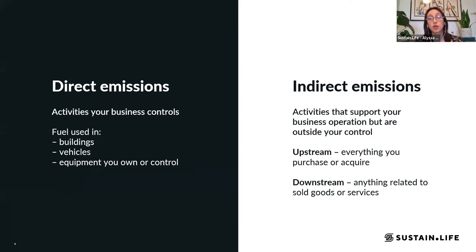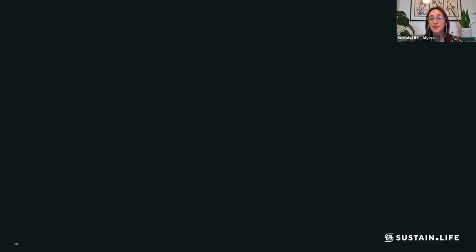We further break down indirect emissions into two categories: upstream and downstream. Upstream is everything that your business purchases or acquires — that's where electricity comes in, because you pay the utility bill. Downstream is anything related to the good or service that your business creates or sells. For example, if you are a professional services provider and your staff goes to client meetings not in company-owned cars but on a subway or in a taxi cab, all the emissions from those modes of transit are downstream emissions because they reflect the service you're providing. And now we're going to go one step further and talk about scopes — scopes one, two, and three.